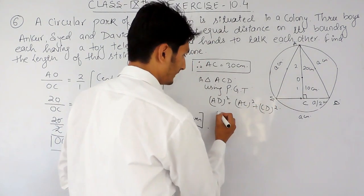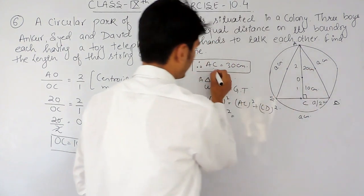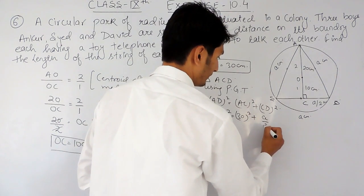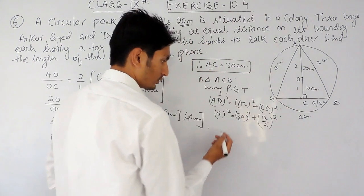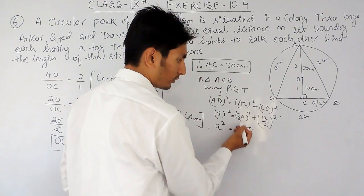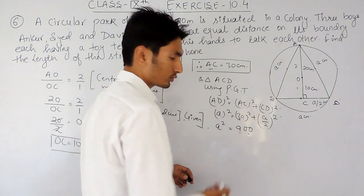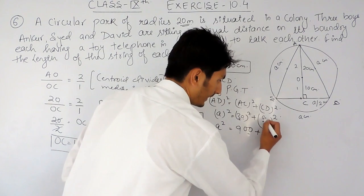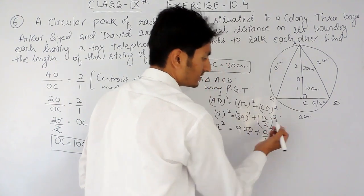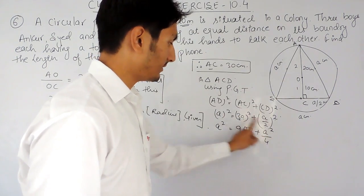The value of AD is 'a', so it will be a². The value of AC is 30 centimeters, and the value of CD is a/2. So a² equals 30² plus (a/2)², which gives a² equals 900 plus a²/4. Shifting the a²/4 term to the left-hand side gives a² minus a²/4 equals 900.